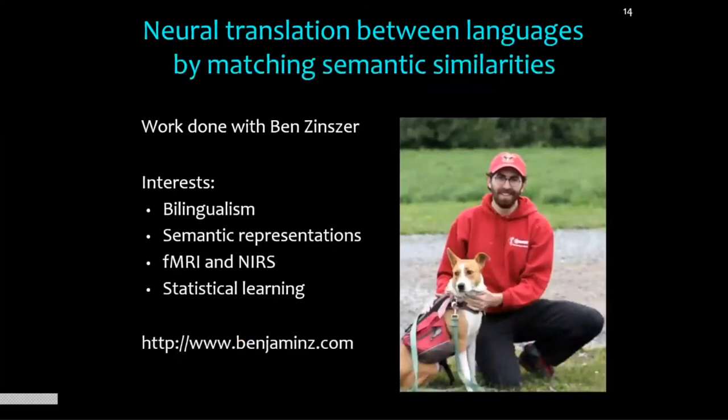One thing I looked at was trying to translate across different languages. Here in this room we have people who speak lots of different native languages, yet somehow we're able to communicate with each other. Somehow we can live in the same shared world of meaning even though our mother tongues were completely different. Can we find the essence of meaning that's shared across different languages and can we find that in the brain — and even better, could we actually read that off from the brain? This is work done with a former postdoc in my lab, Ben Zinszer.